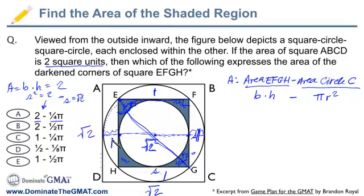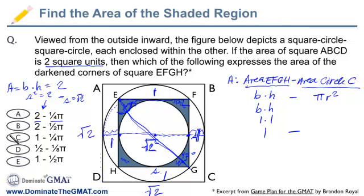That helps us find the area of EFGH: it's base times height, which is 1 times 1, which is just 1. So the answer will be 1 minus something else. Even if you couldn't go any further, this is helpful for eliminating wrong answer choices — only answer choices C and E start with 1 minus. We can eliminate A, B, and D, so we're guessing between C and E.